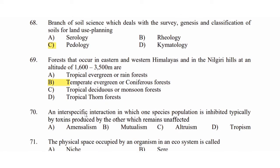Question 70: An interspecific interaction in which one species population is inhibited, typically by a toxin produced by the other, which remains unaffected. Option A: amensalism. Option B: mutualism. Option C: altruism. Option D: tropism. The answer is Option A: amensalism.